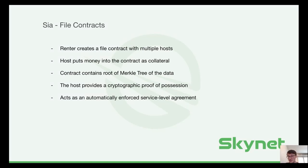To make that possible, a contract contains a special type of hash which is the root of a Merkle tree. A Merkle tree is a type of cryptographic accumulator that allows a host to cryptographically prove possession of the data they hold. So basically it's like an automatically enforced service level agreement between two parties that don't know or trust each other.